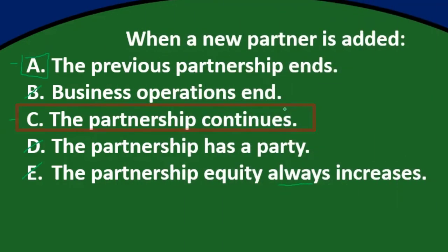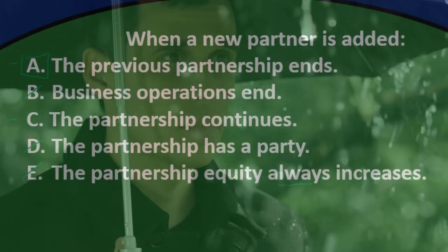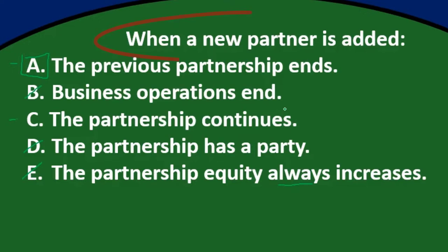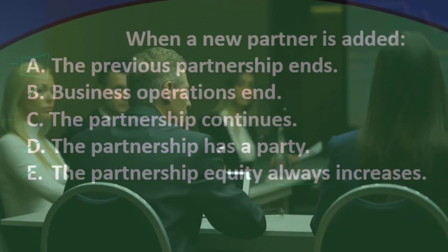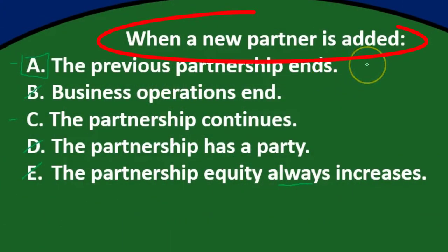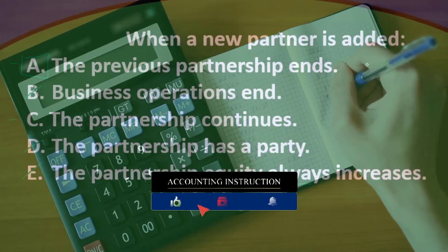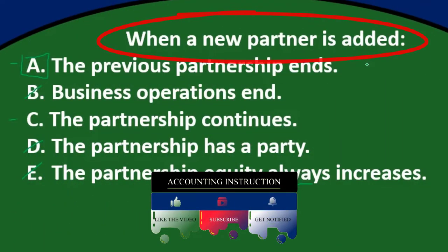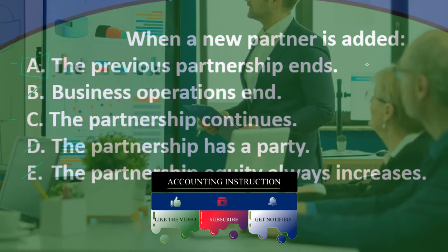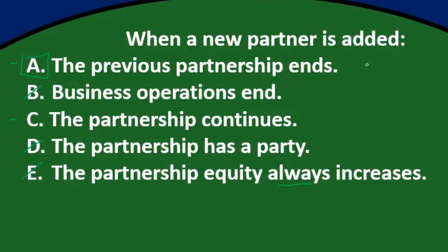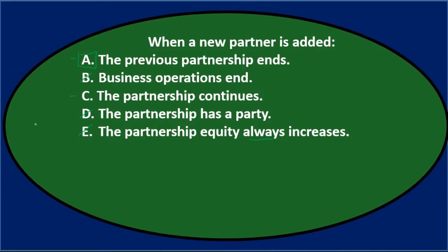Anytime there is a significant change in a general partnership, the limited life concept applies. If someone leaves, dies, or a new partner comes in, you are essentially closing the original partnership and setting up a new one. You typically go through a revaluation process — revaluing assets and liabilities to fair market value, adding the new partner at the proper amount — which resets the capital accounts. The previous partnership terminates and a new one is created.